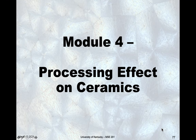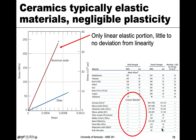In this module, I want to talk about the effects that processing has on the mechanical properties of ceramics. Ceramics are typically elastic materials with negligible plasticity, so we only have that linear elastic portion. This will also apply to other brittle materials with limited plasticity. If you look at the tables in the back of the book and go to ceramics, where you'd see yield strength for metals, you see nothing — because these materials don't yield.